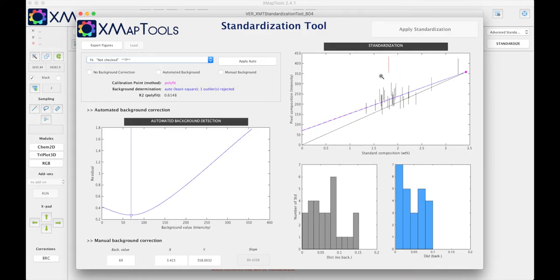This red guy is an outlier. In this automated background detection window there is a diagram showing the evolution of the residual, the residual being the sum of the distances between the spot and the calibration curve with the background value.